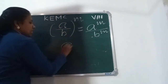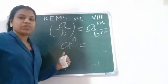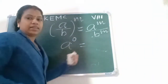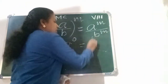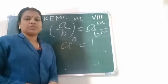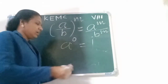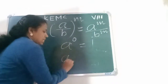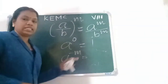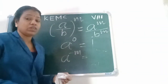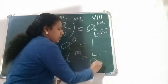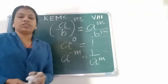Also, A raised to 0 equals 1 — any number raised to the power 0 equals 1. And A raised to minus M equals 1 by A raised to M.